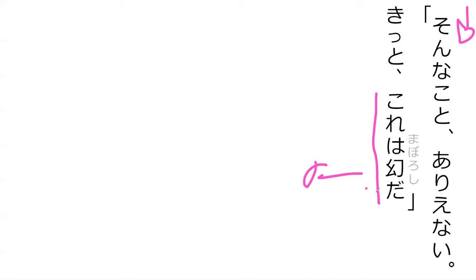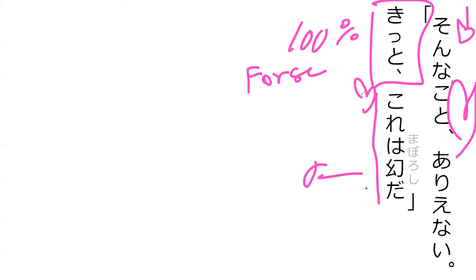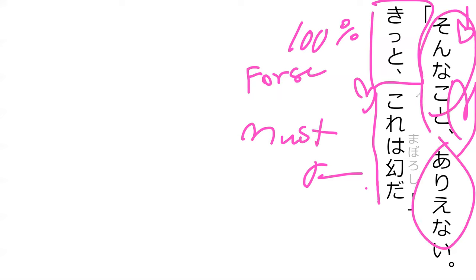So all together what does that mean? 'That's impossible, it's an illusion.' How about きっと — do you know what that means? きっと means for sure, 100%, definitely. So Jack is saying this must be an illusion — he basically added 'must' to the sentence: 'Such a thing is impossible — this must be an illusion.'